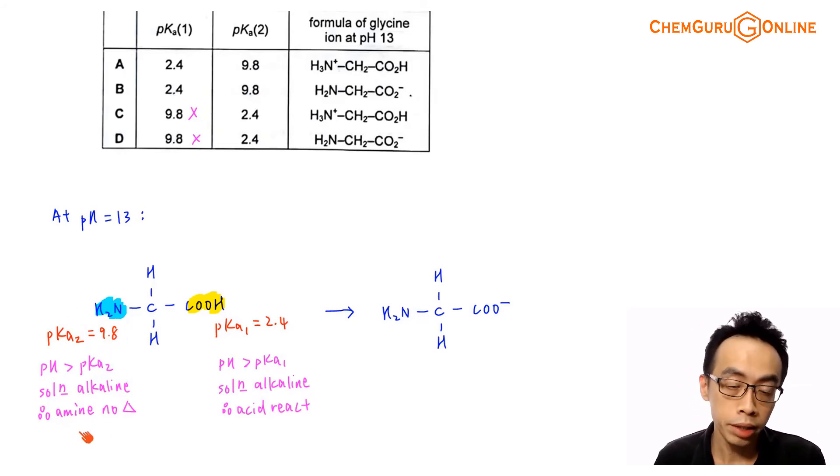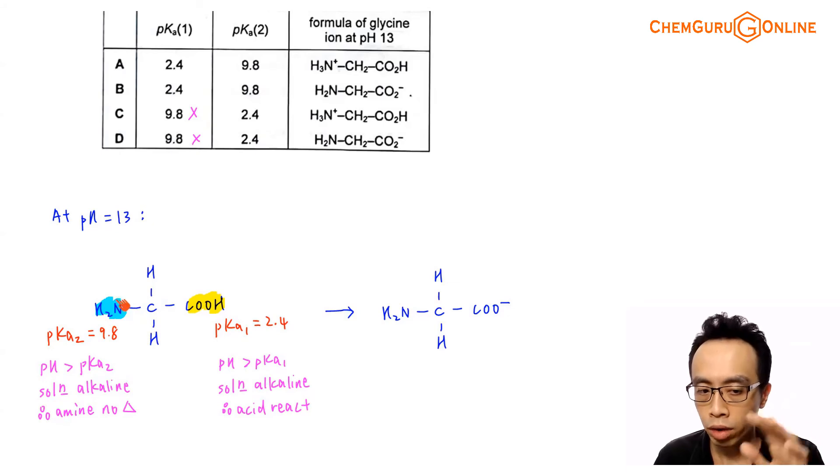Since amine is a base, it only responds to acidic solution. It doesn't react with alkaline solution. So there's no change for your amine functional group. Amine will not respond or react with an alkaline solution. So this would mean that your amine will remain as NH2.